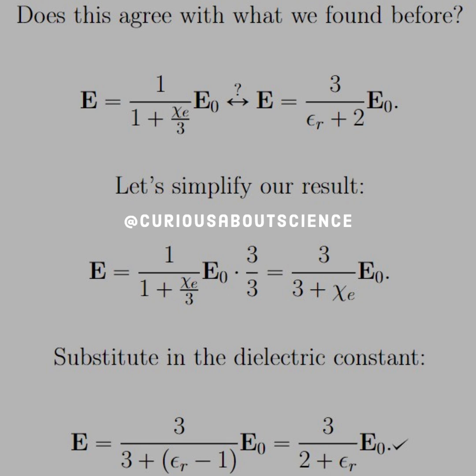Well, we can simplify the result we just found by multiplying numerator and denominator by 3 and then substituting in the relationship between chi E and the dielectric constant. And then we see that they do indeed verify one another.